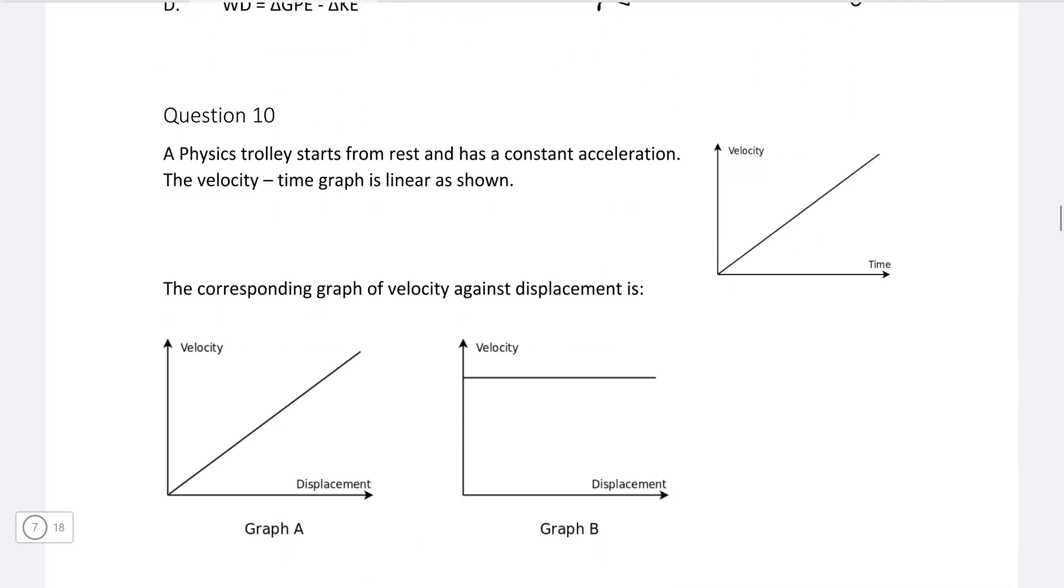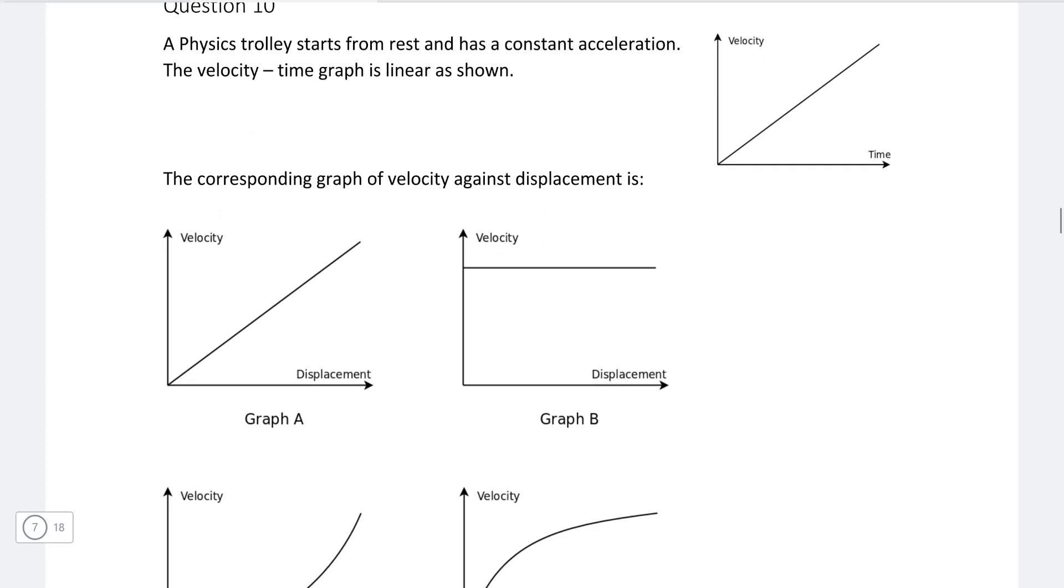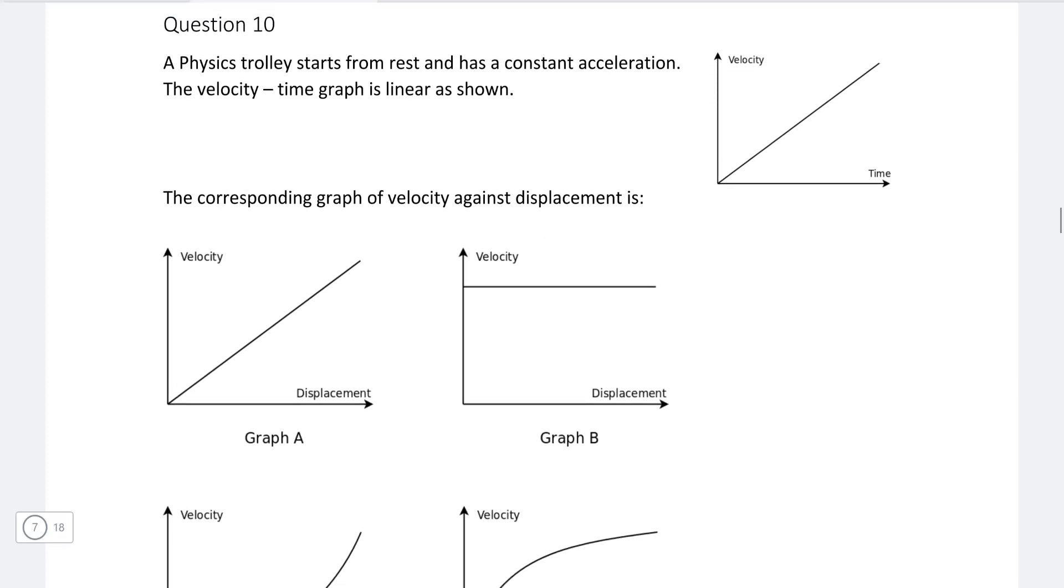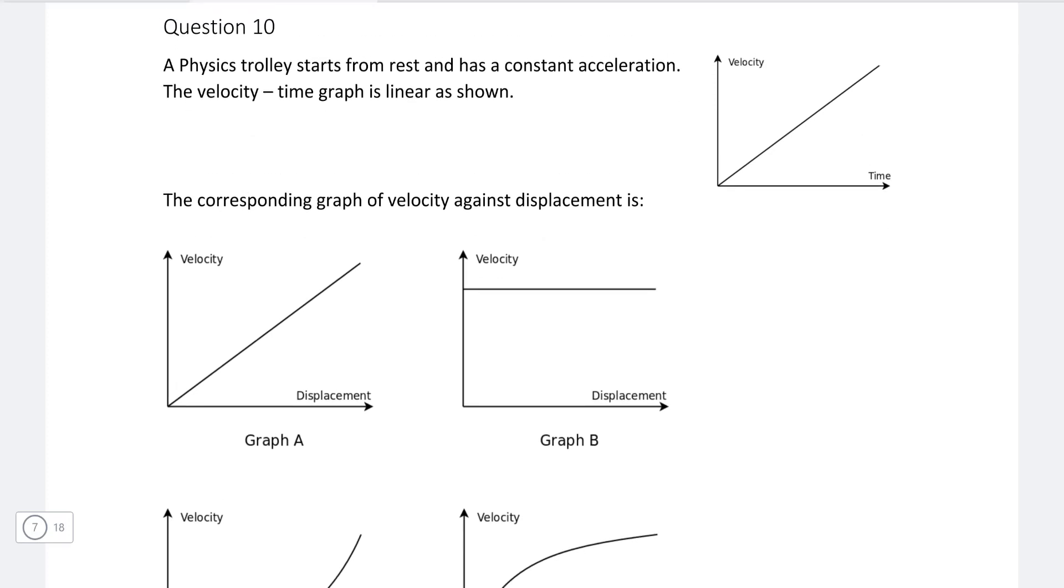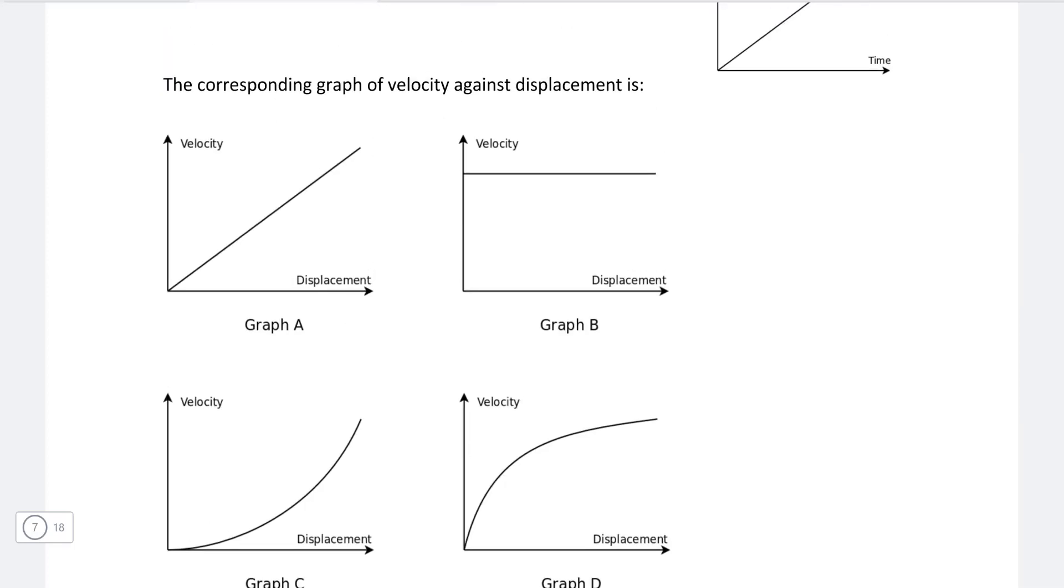Question 10. A physics trolley starts from rest and has a constant acceleration. We're given the velocity-time graph is linear as shown. Okay, here's a linear graph. The corresponding graph of the velocity against displacement is, and we have the following choices.